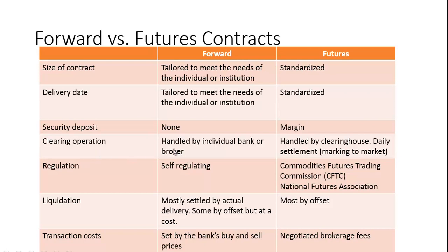The clearing operation for a forward contract is handled by the individual bank or broker, but for futures it's handled by a clearing house. With futures, there's also daily settlement, or marking to market — at the end of the day, the clearing house takes the price, determines who made or lost money, and debits or credits everyone's account. Those who have lost too much may be asked to provide additional margin. In terms of regulation, the forward contract is self-regulating, while the futures contract is regulated by the Commodities Futures Trading Commission or the National Futures Association.